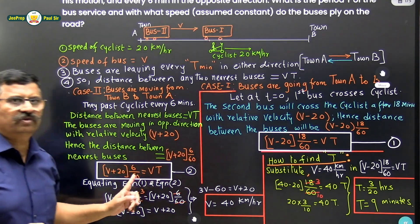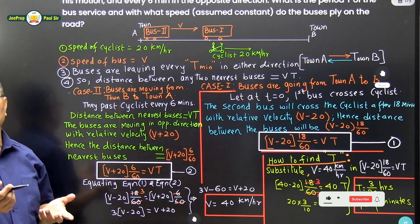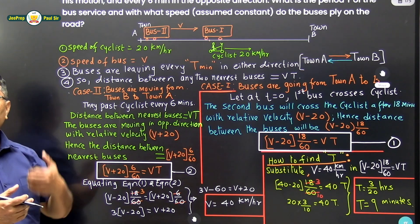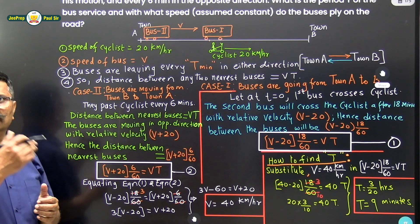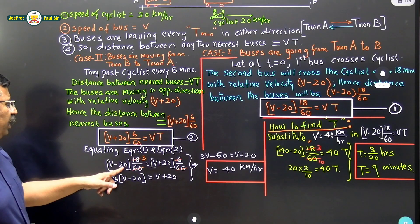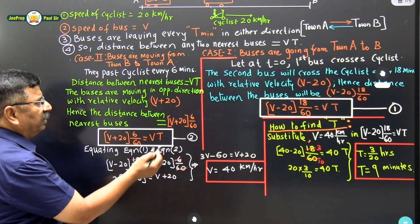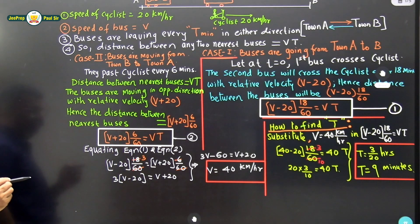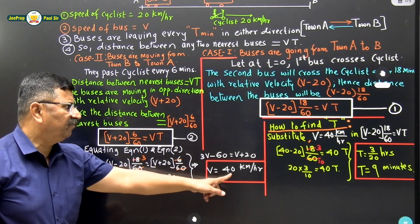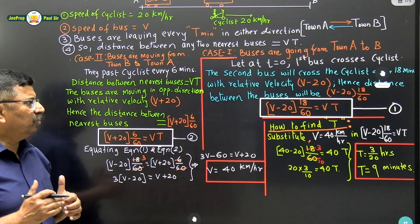We have two equations: Equation 1 from buses moving in the direction of the cyclist crossing every 18 minutes, and Equation 2 from buses moving opposite crossing every 6 minutes. Since both equations have V times T on one side, we equate the other sides: (V minus 20) times 18/60 equals (V plus 20) times 6/60. Simplifying this gives the bus speed V equal to 40 km per hour.